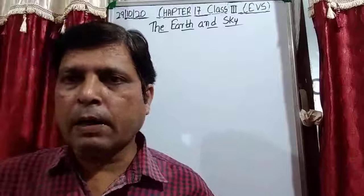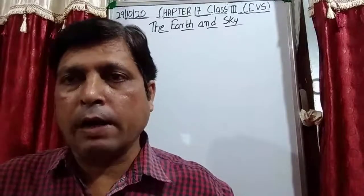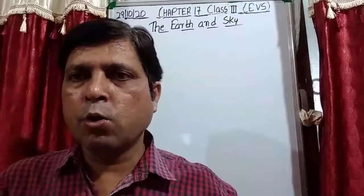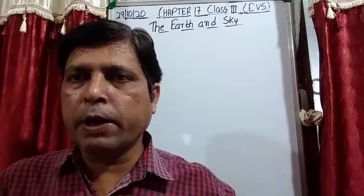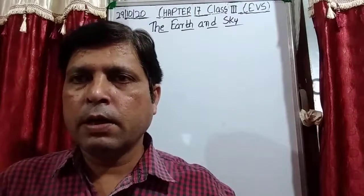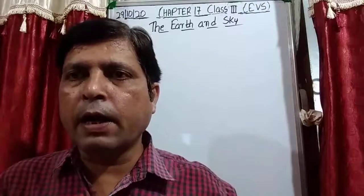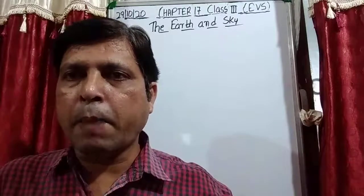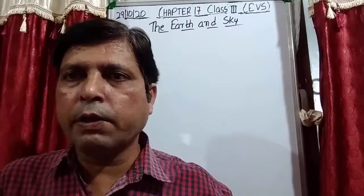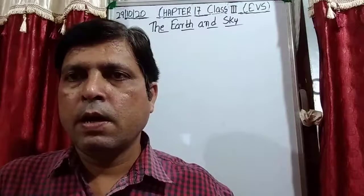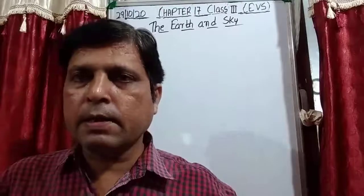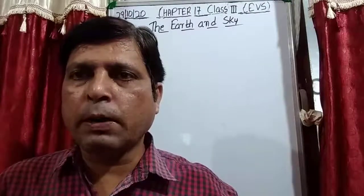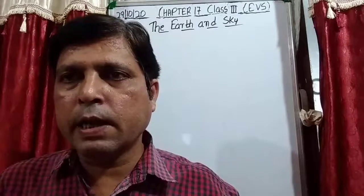All the conditions necessary for life are present on this planet. We are living on the surface of the Earth. The surface of the Earth is not the same — it has different physical divisions. About 72% is water, and the rest is also not plain.